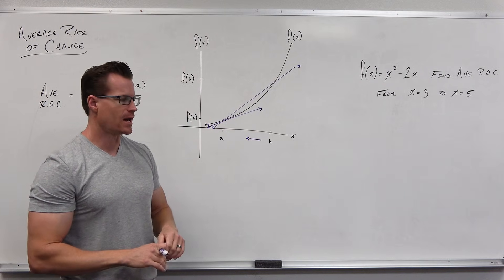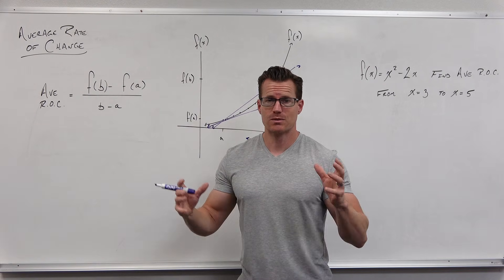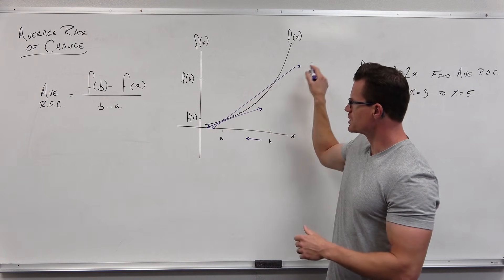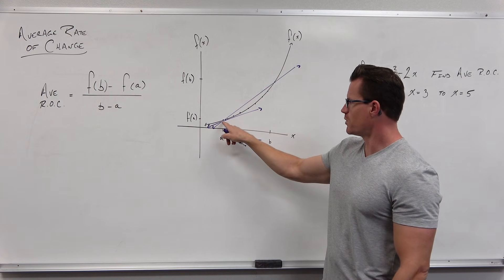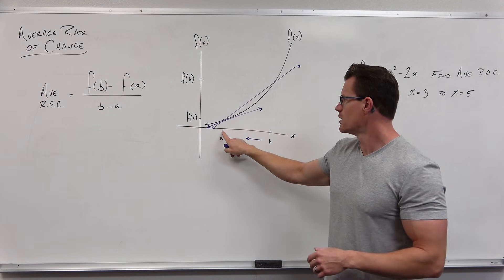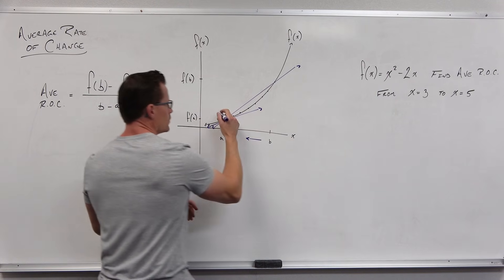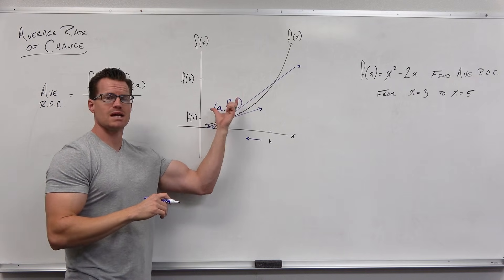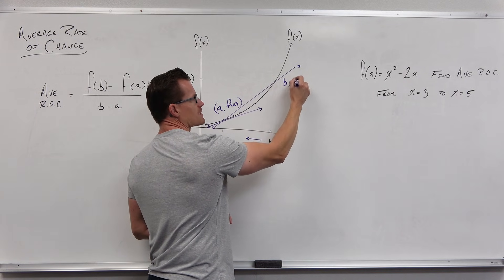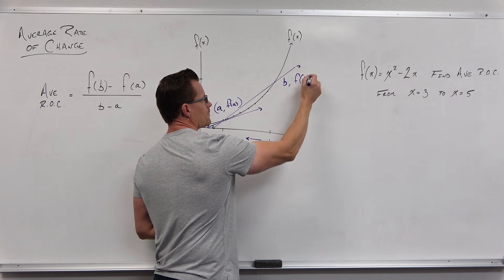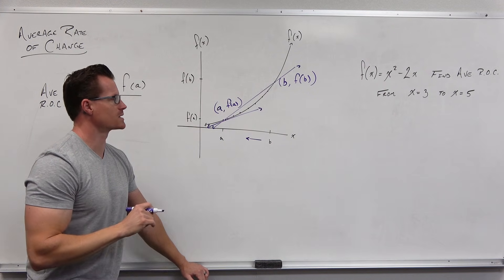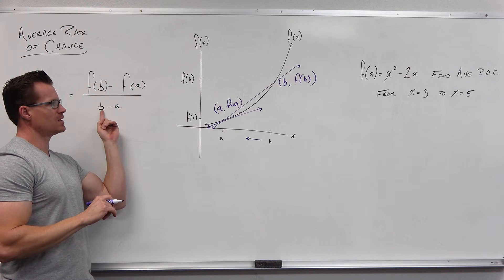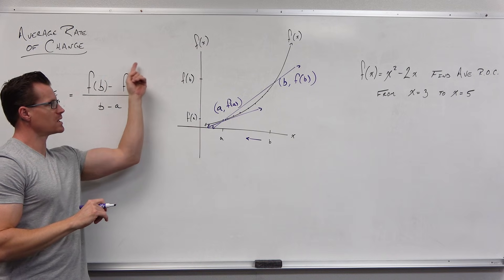The average rate of change, long story short, is really just the slope between two points. If I'm trying to find the slope of this original secant line, here's a point with an x value and input of a, and it would have an output of f of a. Because the point here would be x comma y — input, output. This formula says: output minus output over input minus input, and this is one point, and this is another point. So this is an x value and its corresponding y value; this is a different x value and its corresponding different y value. f of b is one output minus f of a, another output, over the input that relates to that output minus the input that relates to the other output.